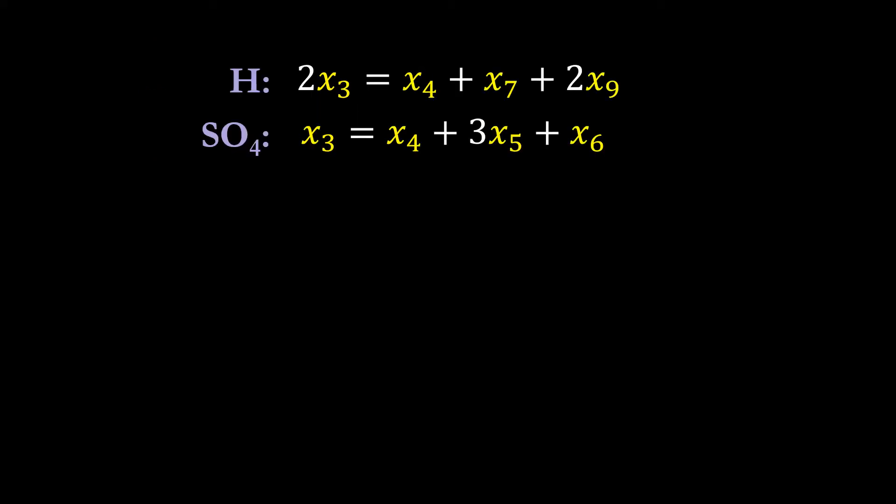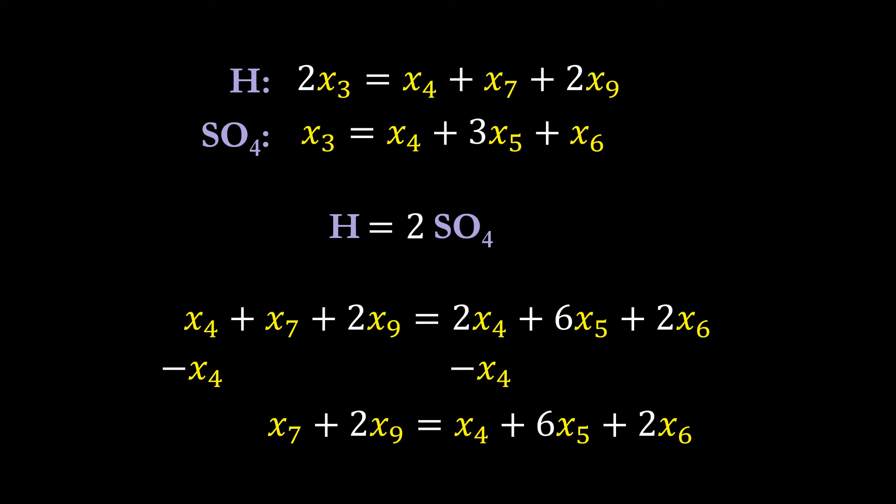The best way to start trying to solve this system of equations is to set some of the larger equations equal to each other in some fashion. One thing you'll notice is that the equation for hydrogen involves an X3 and the equation for sulfate involves an X3. So what we can do is we can use this relationship and come up with this new equation right here. The goal is to take this longer equation and get to a point where it's only in terms of two variables. So we need to simplify it. The first step is to recognize that X4 is on both sides, so we can get that on the same side and reduce the equation to this form as a first step.